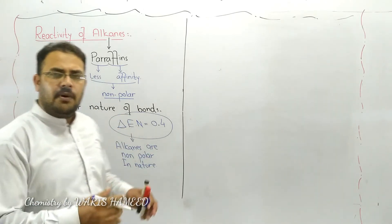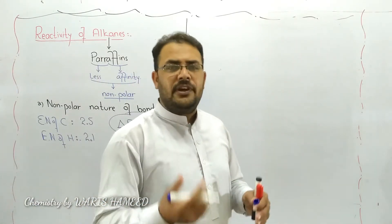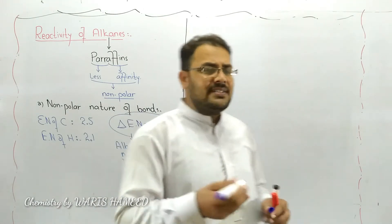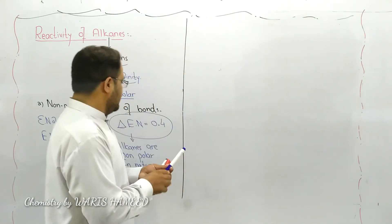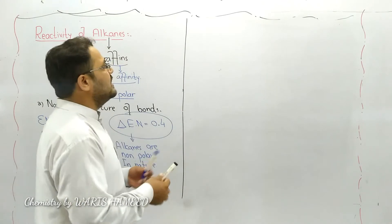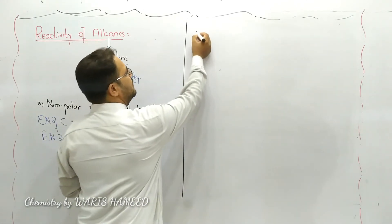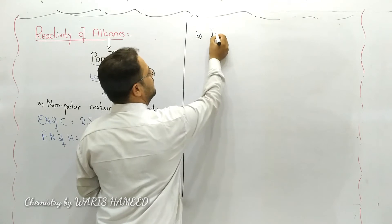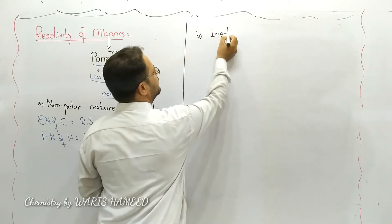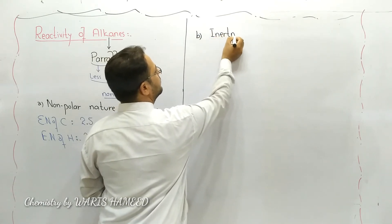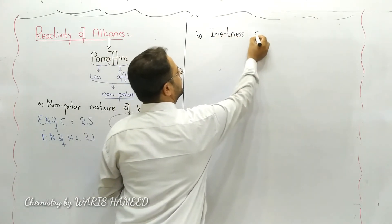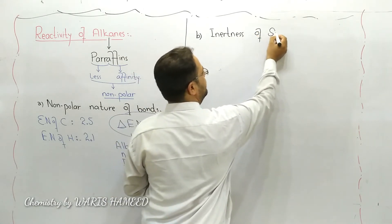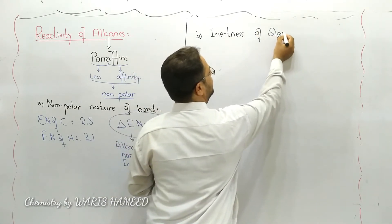If any compound is non-polar, we can say that it is least reactive. The second parameter is the inertness of the sigma bond.